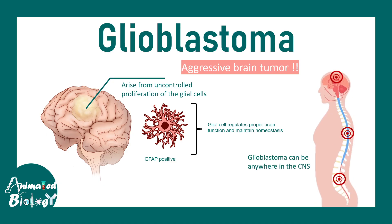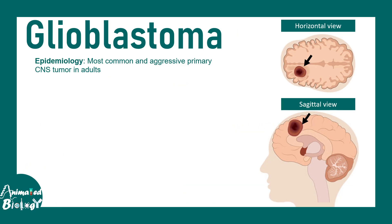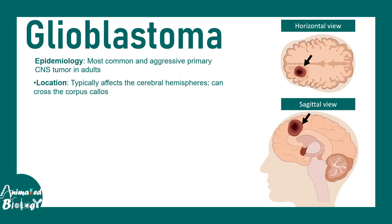Glioblastoma can be anywhere throughout the CNS — it could be in the spinal cord or even in the brain. But glioblastoma is more commonly found in the cerebral hemispheres. It affects the cerebral hemispheres and can cross the corpus callosum, which is the white matter connection between the two hemispheres. That is why this is also termed as butterfly glioma.